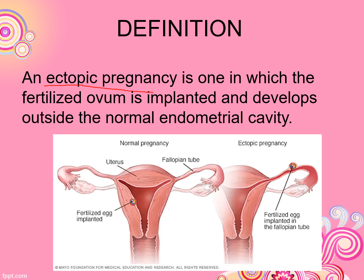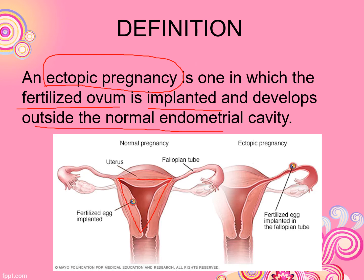What is the definition of ectopic pregnancy? In ectopic pregnancy, the fertilized ovum — called the fertilized womb — is implanted outside the uterine cavity. This is a very simple definition: the fertilized ovum is implanted and develops outside of the uterine cavity.